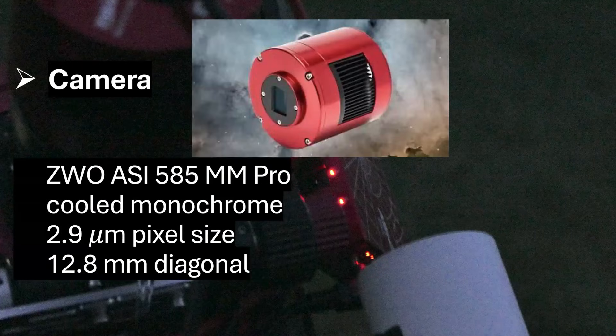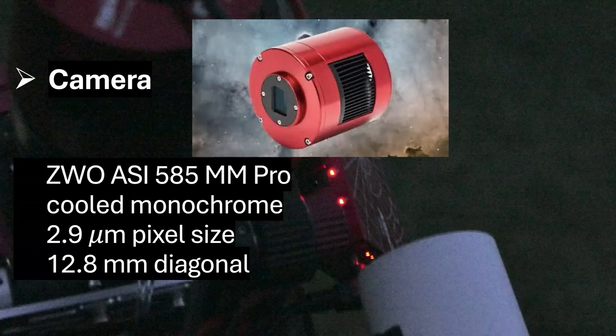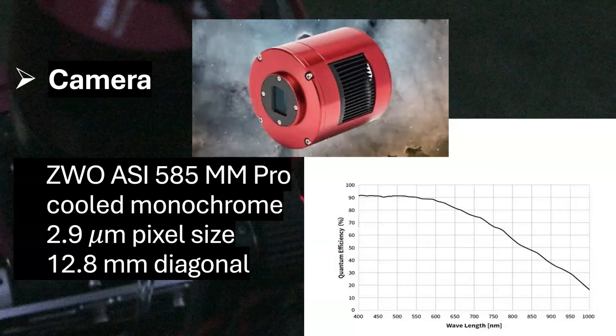Okay, let's start with the setup. The most important part is, of course, the sensor. I'm using the ZWO ASI 585 monochrome cooled camera with a pixel size of 2.9 micrometers. The quantum efficiency is shown in the graph reaching down to 1000 nanometers.